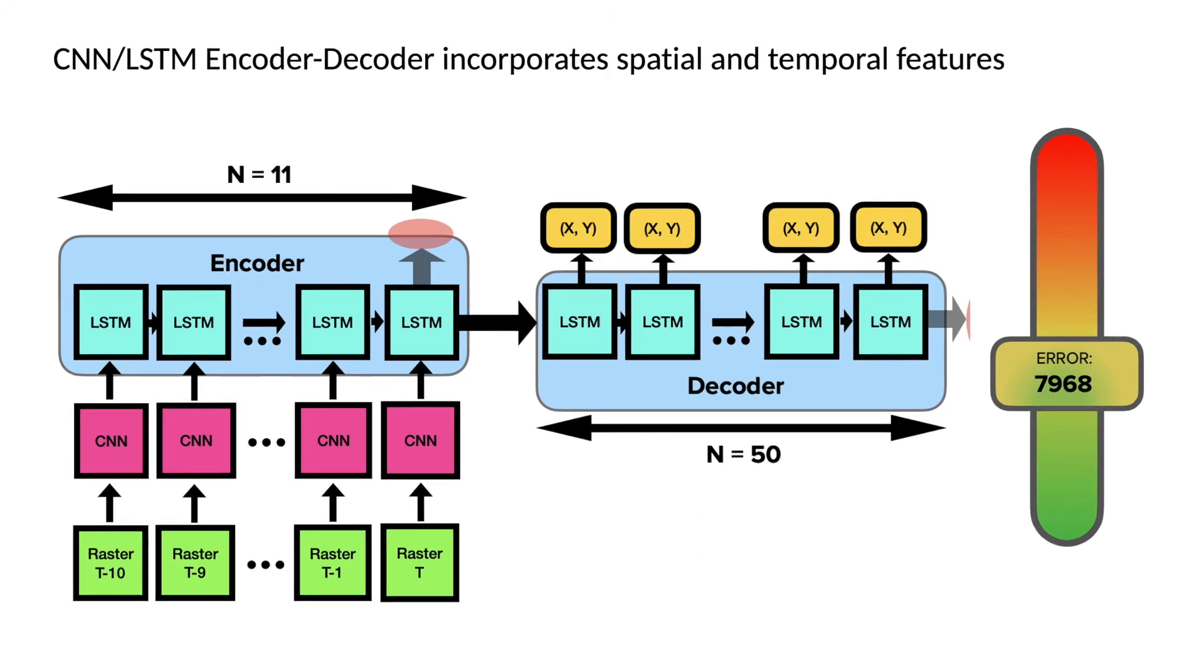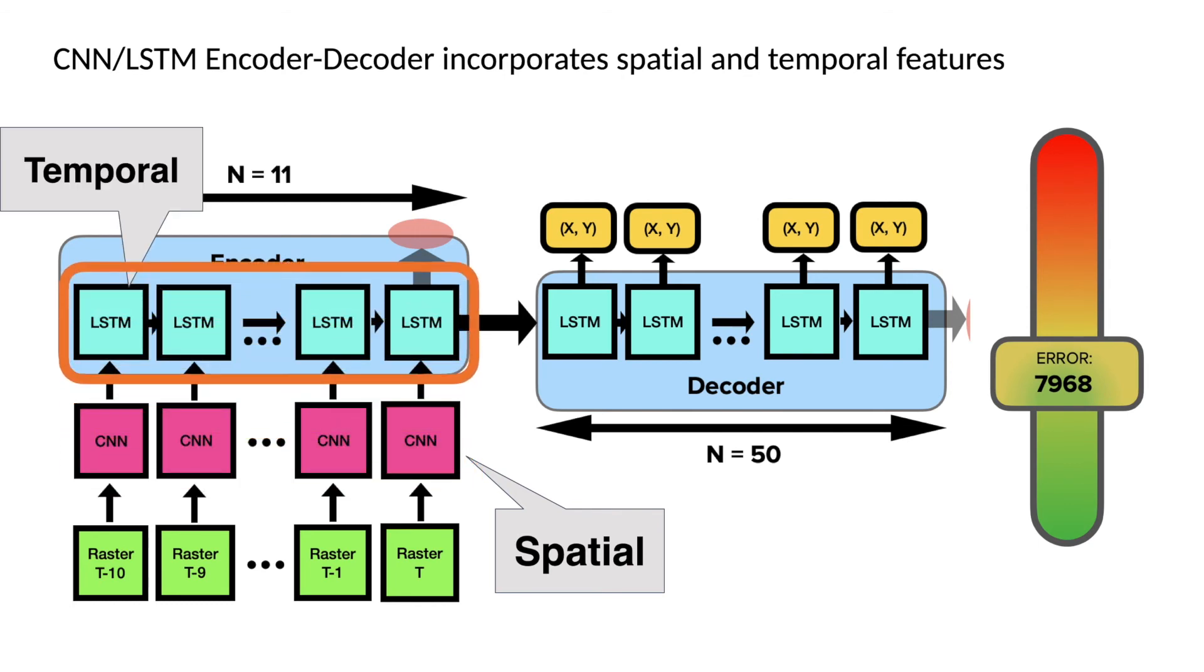The final model that we built combines the spatial awareness of the CNN and the temporal awareness of the LSTM in order to more effectively train and predict the motion of other vehicles. This model is called the CNN-LSTM encoder decoder, and it incorporates the benefits of both of these base models. Just like the RNN or the LSTM, we take a series of rasterized images, but instead of feeding them directly into an RNN, we first feed them into a CNN, which extracts the most important spatial features from each image, which is then fed into LSTMs. As you can see, we have 11 of these LSTMs stacked together, 10 historical frames and one current frame.